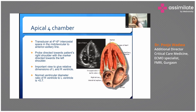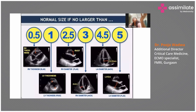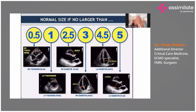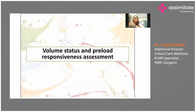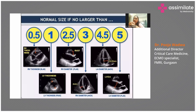The right ventricle is around one third the size of the left ventricle. This is very important — you need to know the normal values to appreciate any abnormalities. A crude way to remember: right ventricle wall thickness is 0.5 cm, left ventricle thickness is 1 cm, right ventricle diameter is between 2.5 to 3 cm, left atrial diameter is 4.5 cm, and left ventricle diameter is 5 cm.